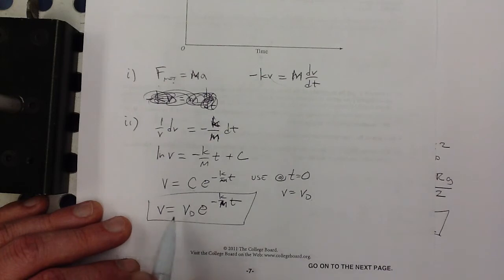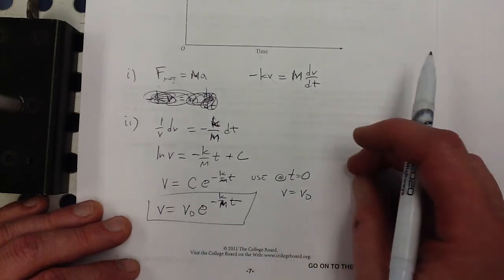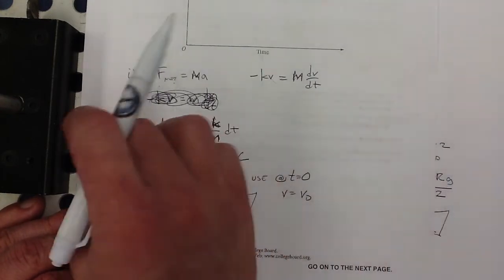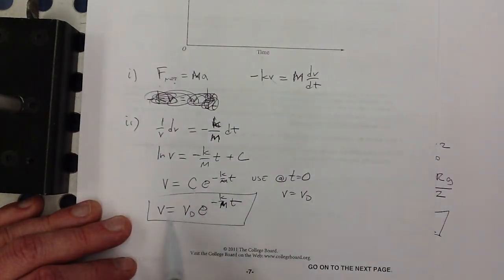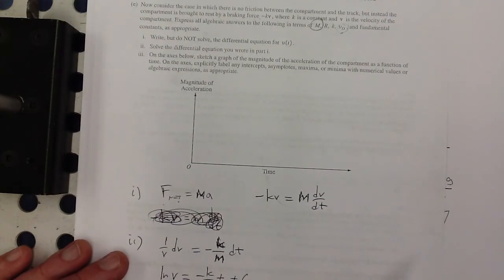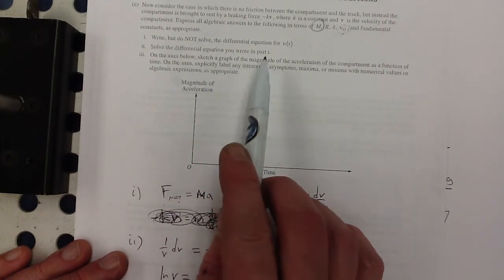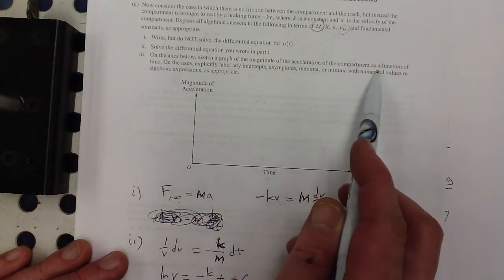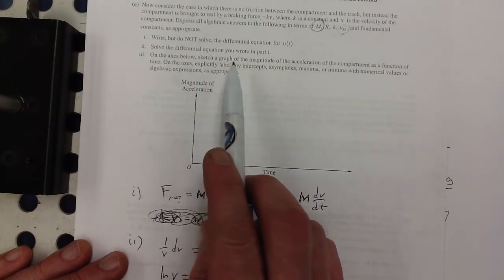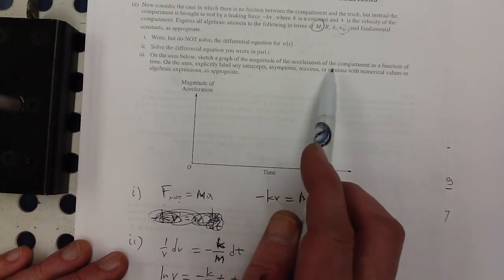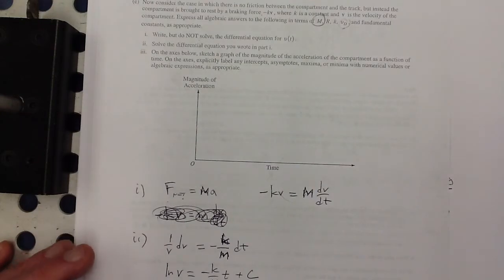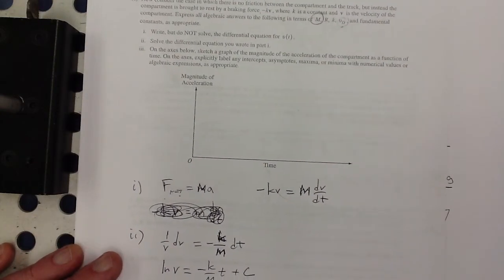There's the solution it was a simpler situation because we didn't have two forces fighting against each other here we didn't have gravity this was laid out horizontally that's why this turned out to be simpler than the air resistance problem. All right on the axis below sketch a graph of the magnitude of the acceleration of the compartment as a function of time on the axis explicitly label any intercepts as maximums minimums with numerical values or algebraic expressions as appropriate.